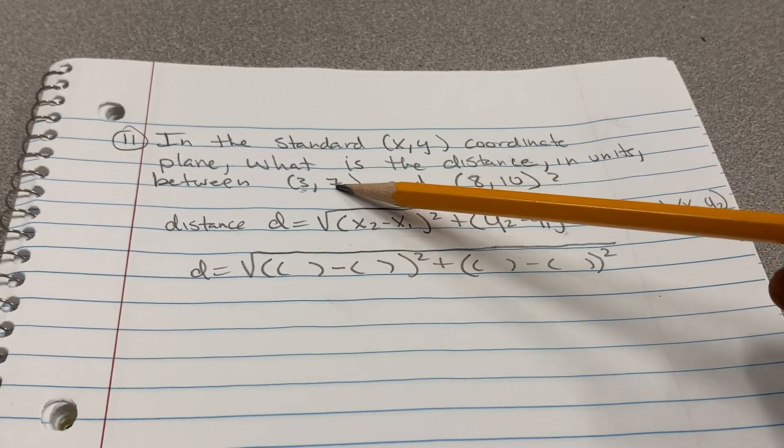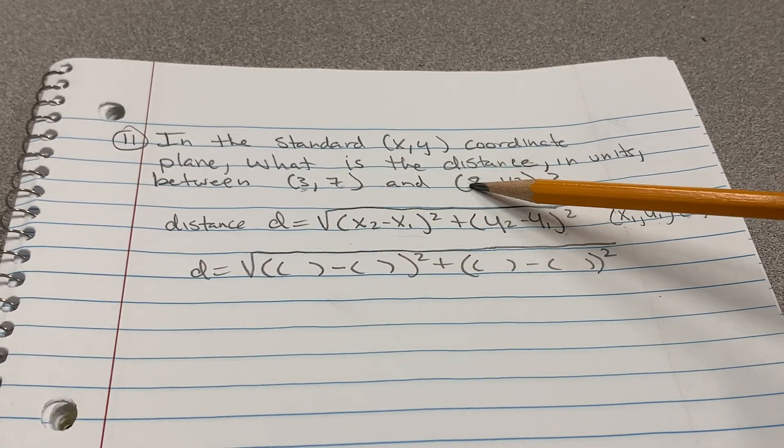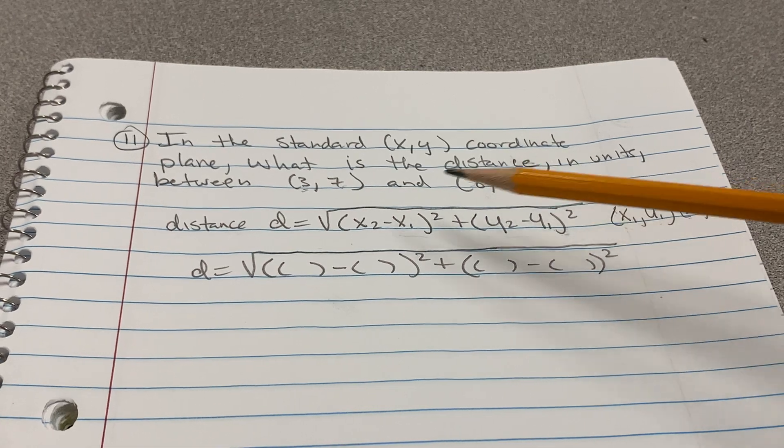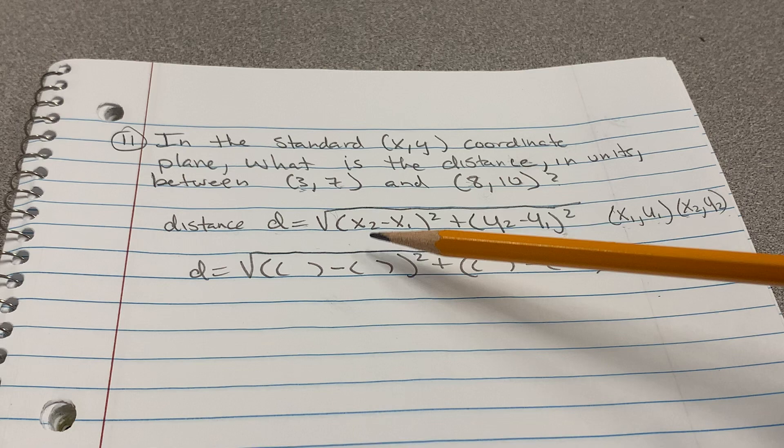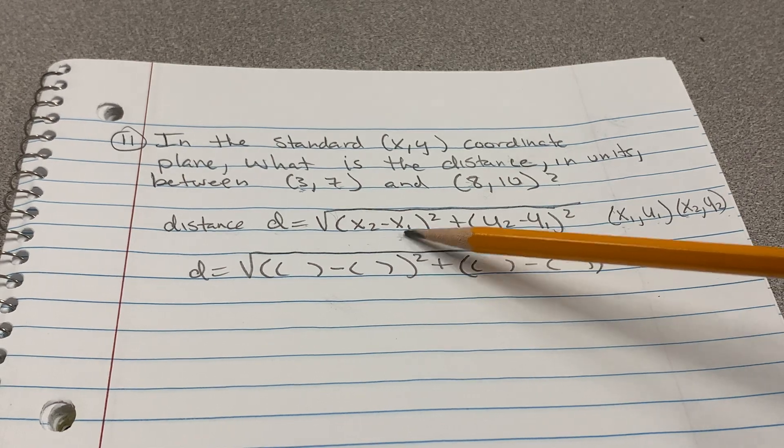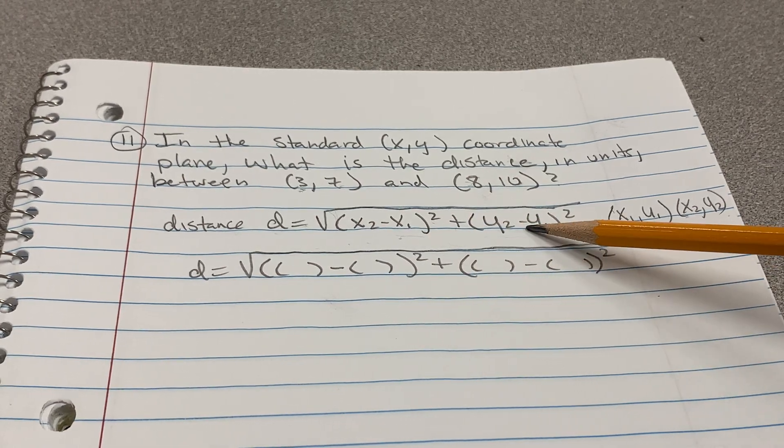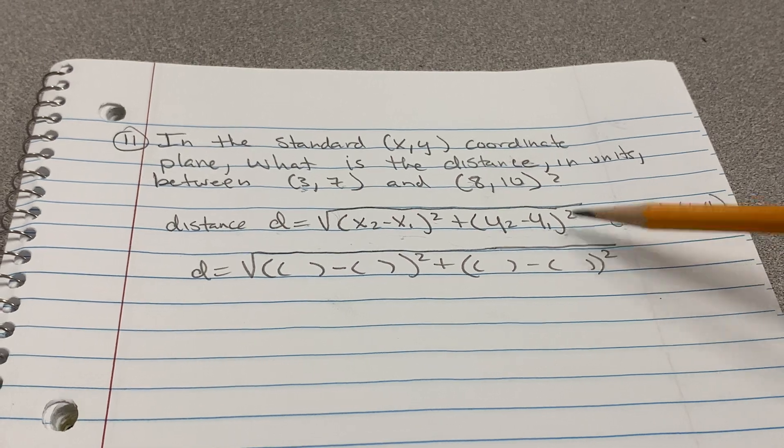This is x1, this is y1. This is x2, this is y2. And you see the formula says distance is equal to the square root of (x2 minus x1) squared plus (y2 minus y1) squared.